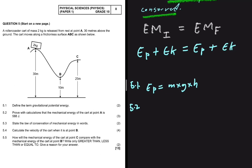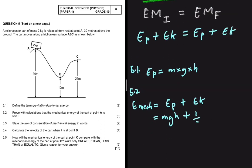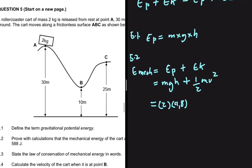Moving to 5.2: Prove with calculations that the mechanical energy of the cart at point A is 588 joules. The mechanical energy at point A equals the potential energy plus the kinetic energy. The potential energy is mass times gravity times height, and kinetic energy is half mass times velocity squared. The mass is 2 kg, gravitational acceleration is 9.8, and at point A the height is 30 meters.